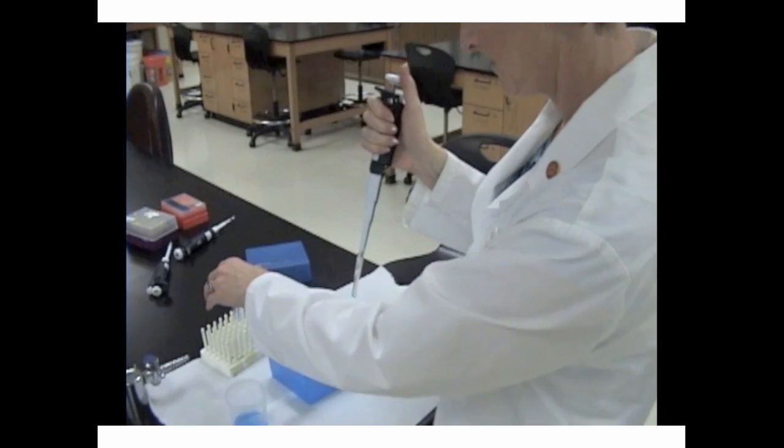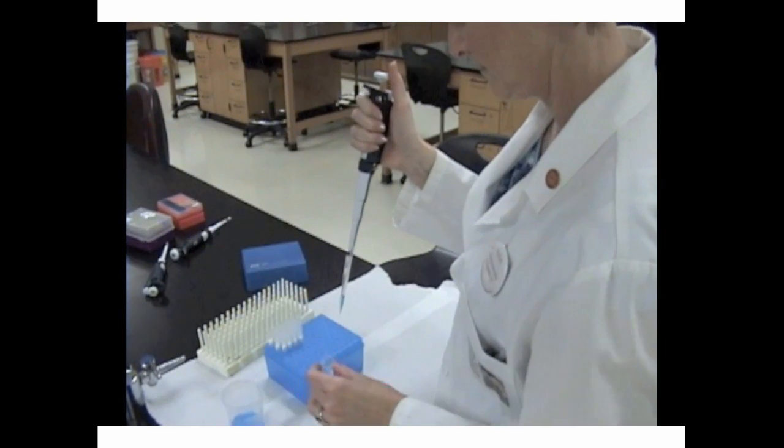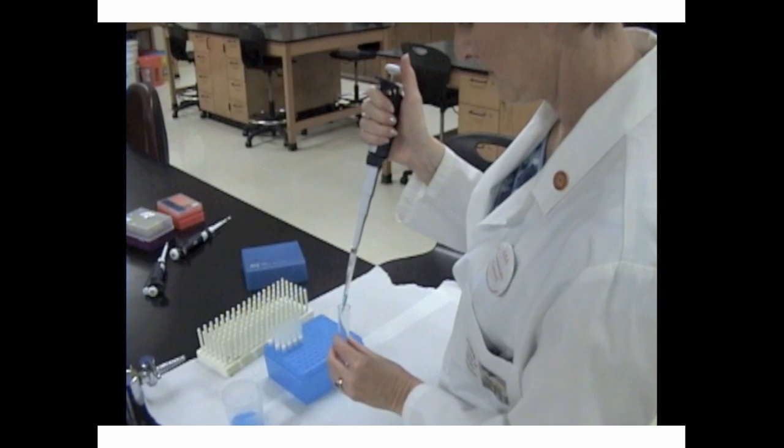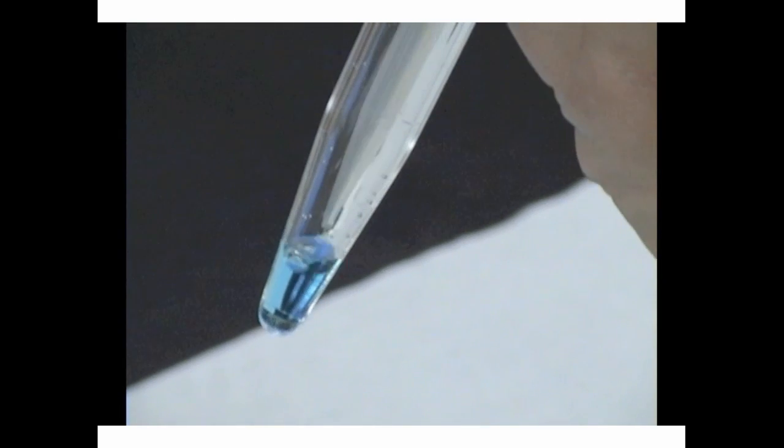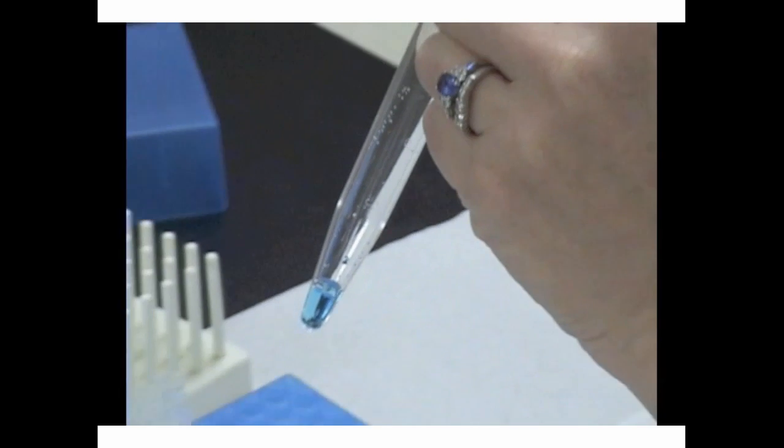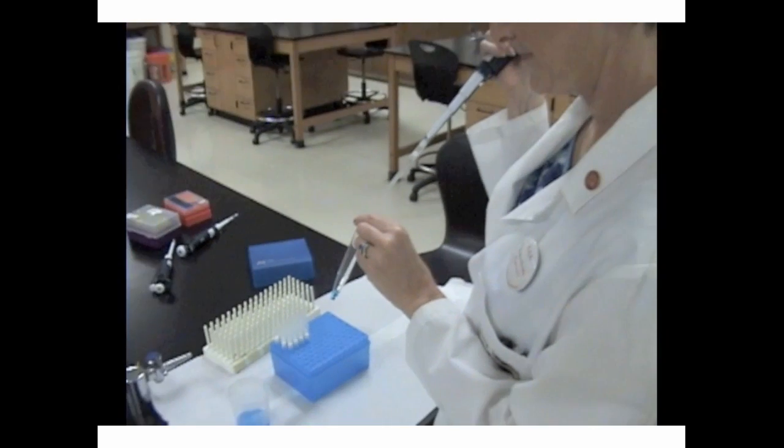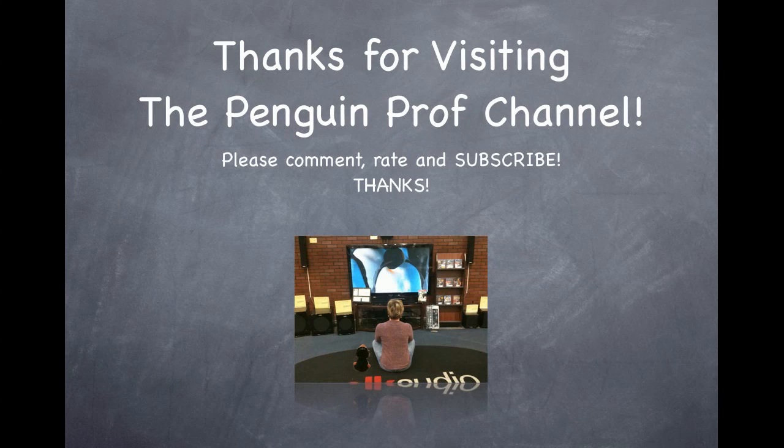Next, I'm going to take the tube that I'm going to be dispensing into. I'm going to insert the tip. I'm going to press down all the way to the first stop and then to the second stop. That's going to give a little bit more of a push. You can see the bubbles there to release any extra droplet. And there you have it.